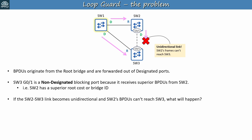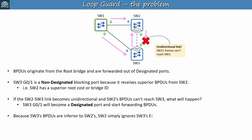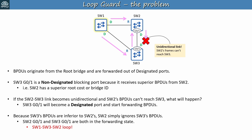Let's assume there's a physical issue that prevents SW2's frames from reaching SW3 but doesn't cause the switches to disable their G0-1 interfaces — the switches don't detect the underlying physical issue. SW3, which no longer receives BPDUs from SW2, will assume there is no more loop in the LAN. After the max age timer expires, SW3 G0-1 will become a designated port and start forwarding BPDUs to SW2. Because SW3's BPDUs are inferior to SW2's, SW2 simply ignores them. So SW2 G0-1 and SW3 G0-1 are both in the forwarding state, meaning we have a loop from SW1 to SW3 to SW2.